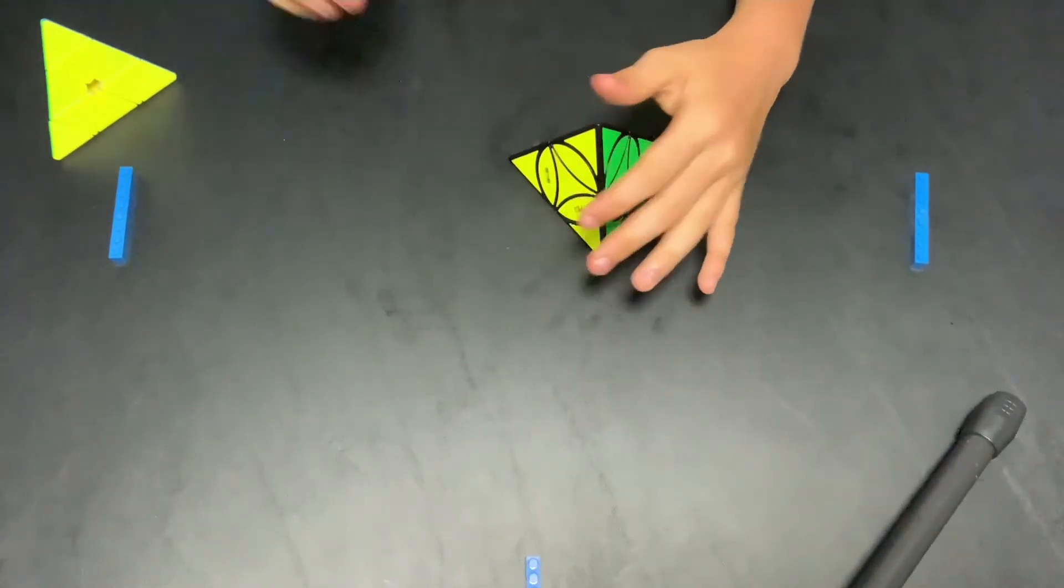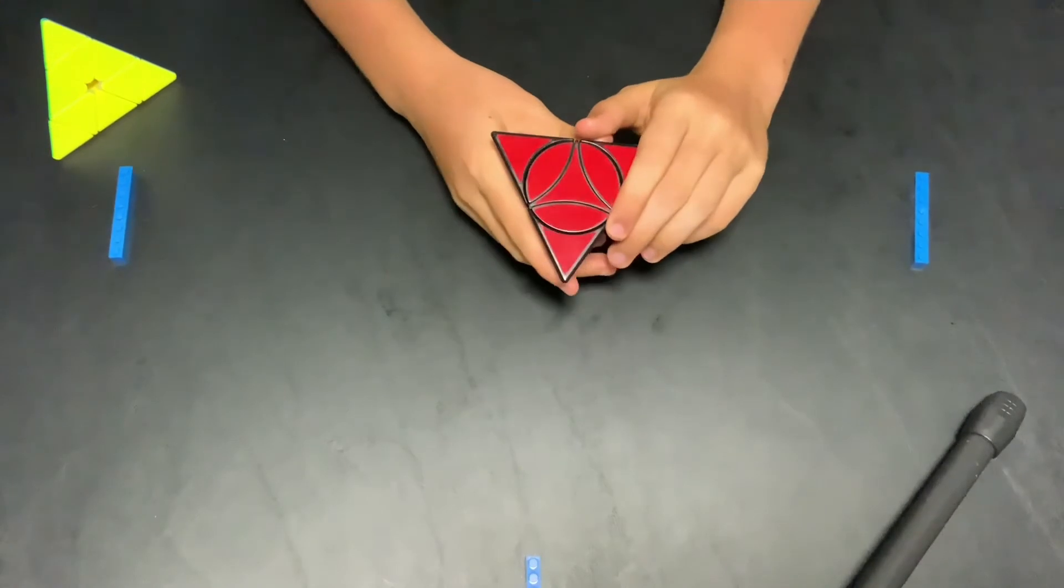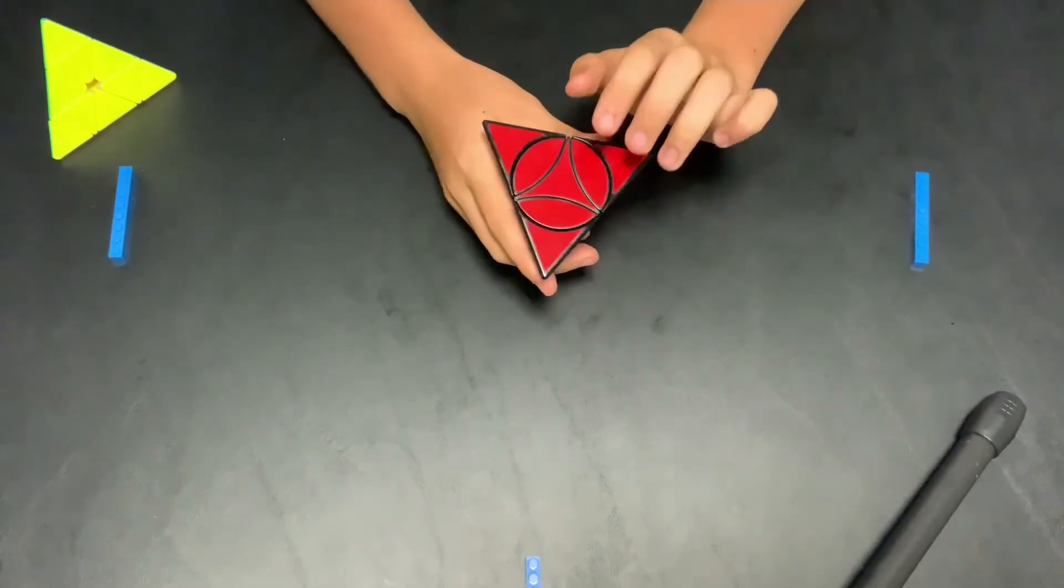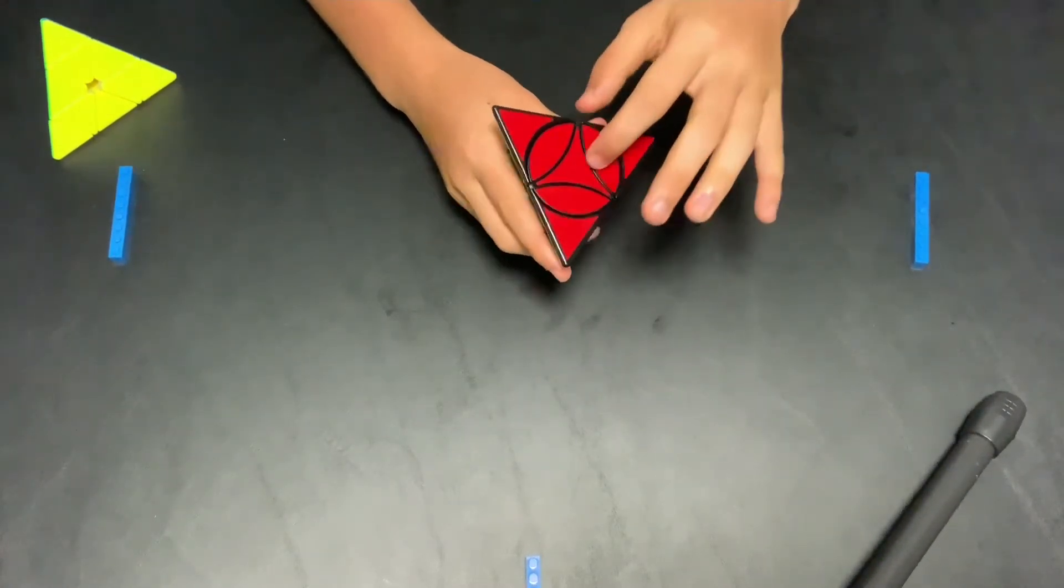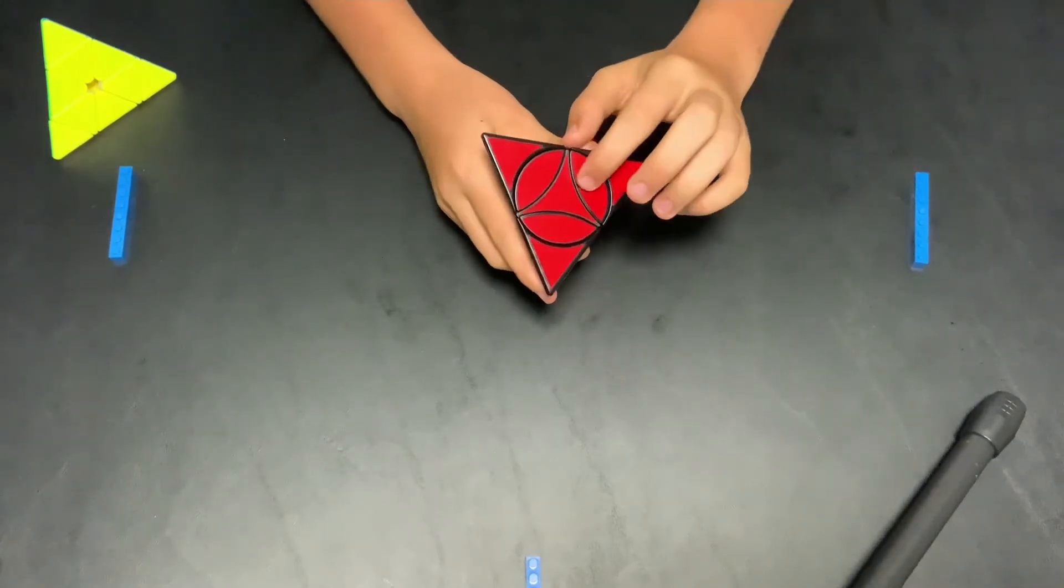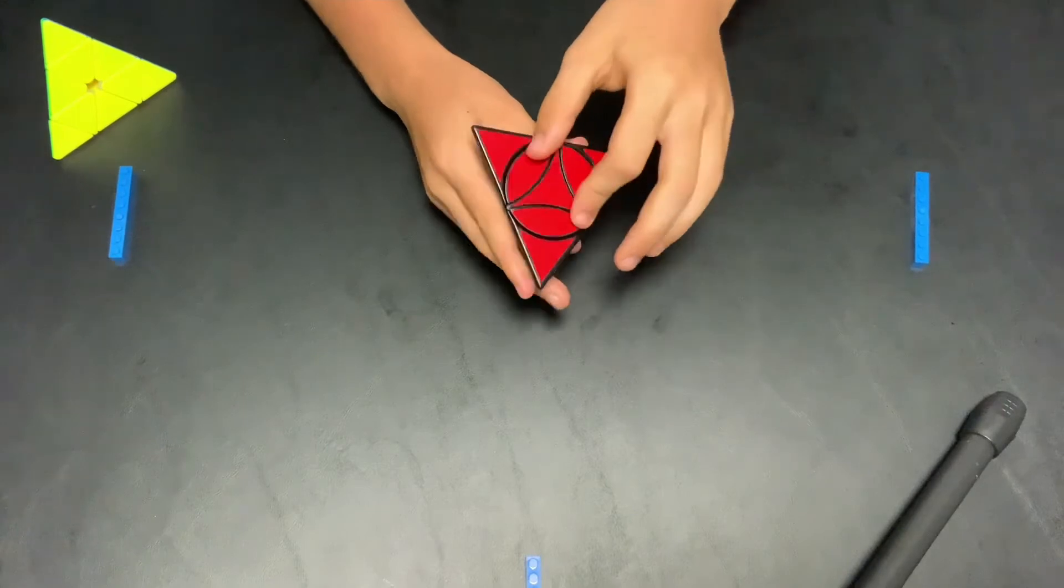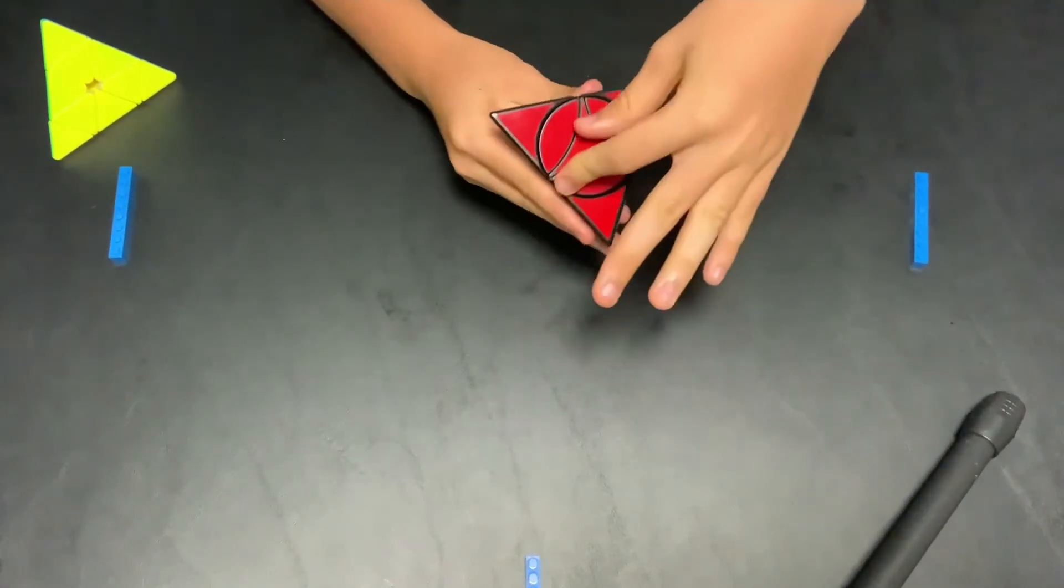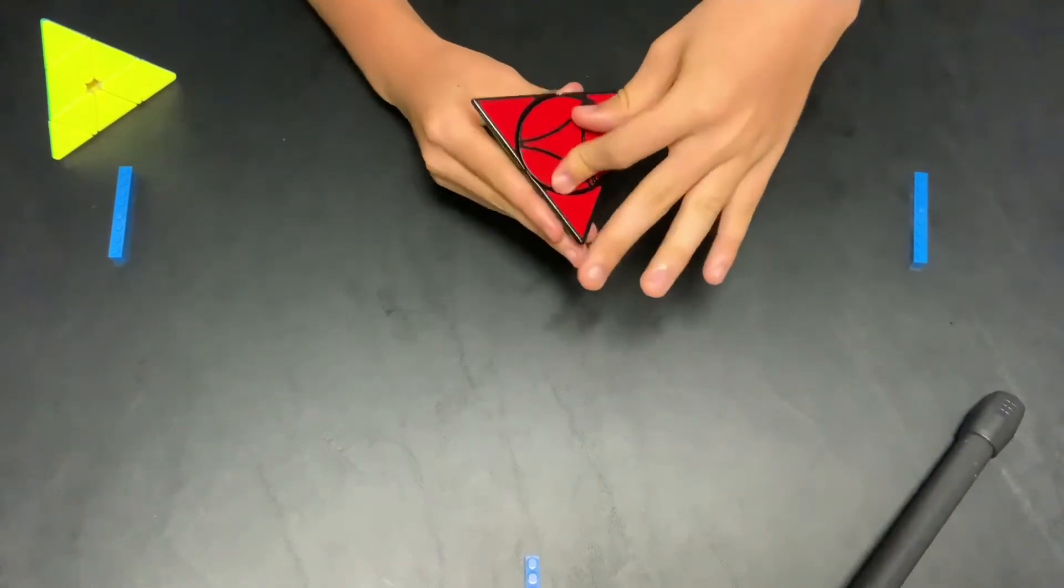But one thing that's very different from the pyraminx that kind of distinguishes the coin pyraminx is the fact that the top side, the whole main top face of the cube from basically the center and the edge pieces can actually turn like so. So you see it's kind of turning almost like a clock in that motion.